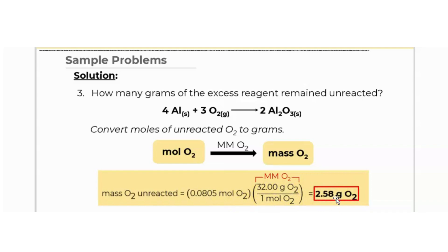I hope this is clear. If you have any questions, feel free to comment down below. This is actually method four, as we have already mentioned three previous methods of determining the limiting reagent and excess reagent. This is the fourth method, using the product. Thank you so much for listening.